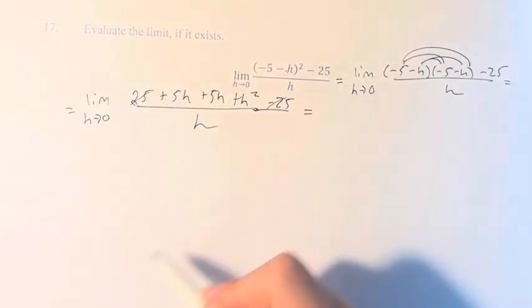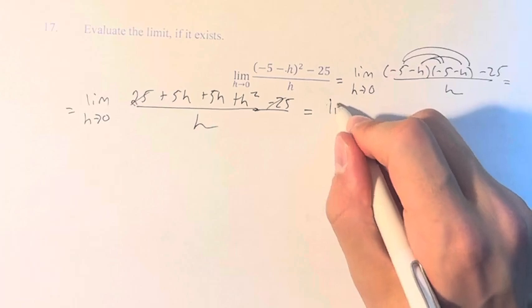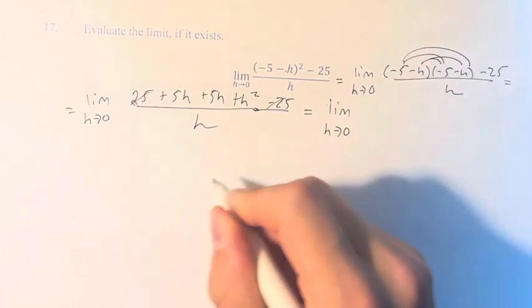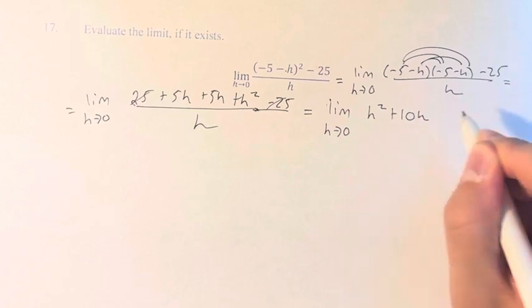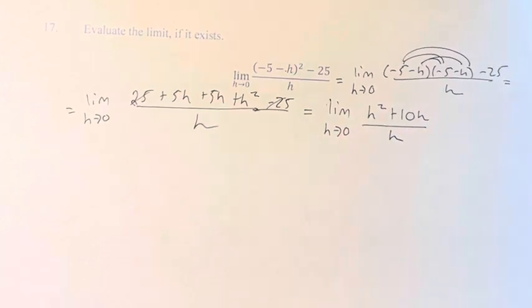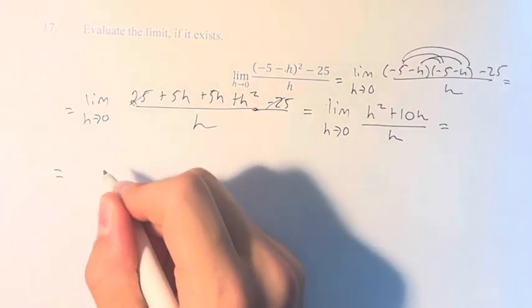25 minus 25 cancel each other out. Therefore we have the limit as h approaches 0 of h² + 5h + 5h, which is +10h over h. And now we can simplify this.